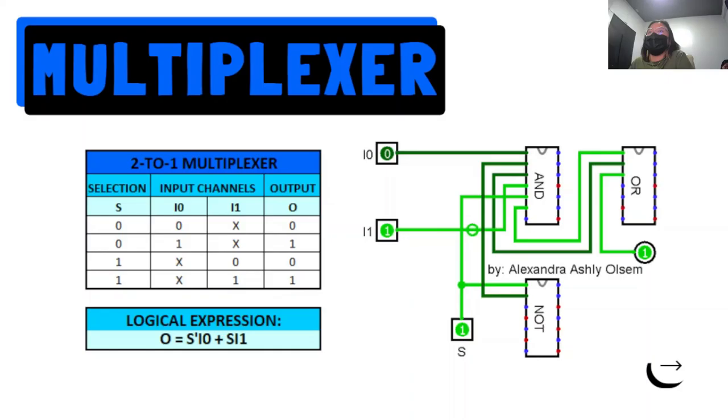Here it is. If you have I0 equals to zero and I1 is equal to one, we get an output of one, also when S is one.